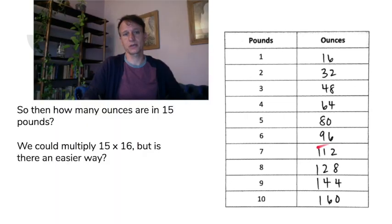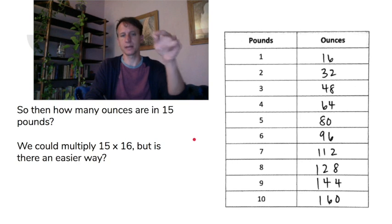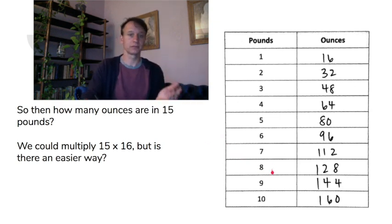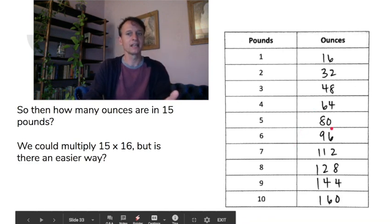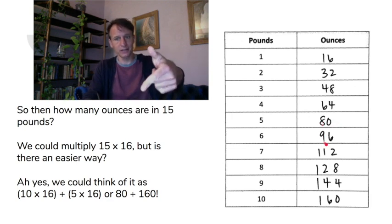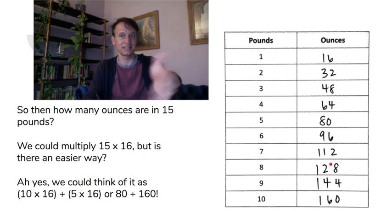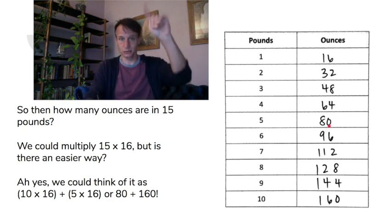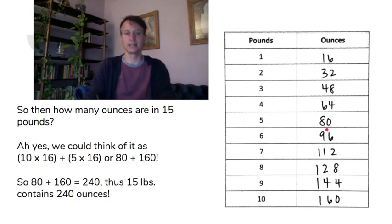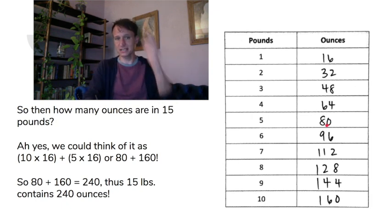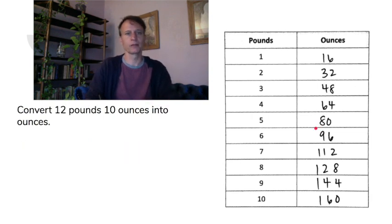This table is a starting point, and now we can use it to answer questions. For example, how many ounces are in fifteen pounds? You could multiply fifteen times sixteen, but an easier way is to decompose fifteen as ten pounds and five pounds. We already have ten times sixteen and five times sixteen in the table, so we pop them together: eighty plus one hundred sixty is two hundred forty. Fifteen pounds contains two hundred forty ounces.